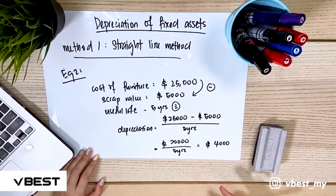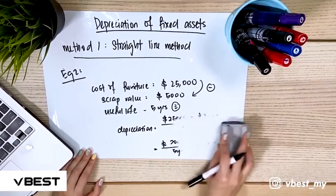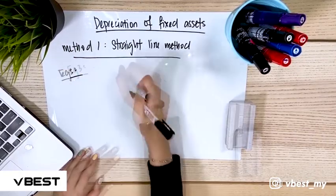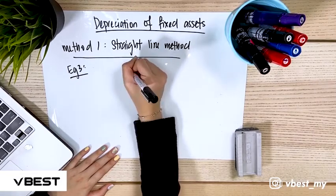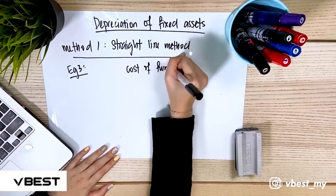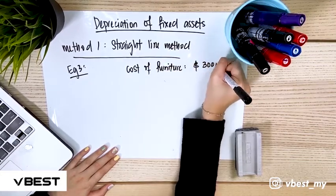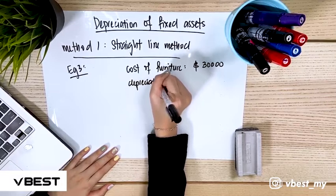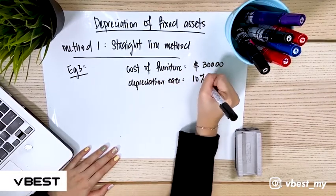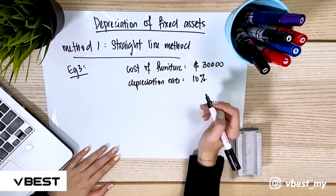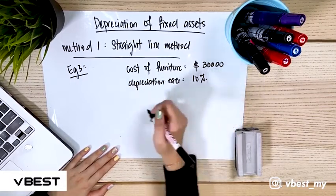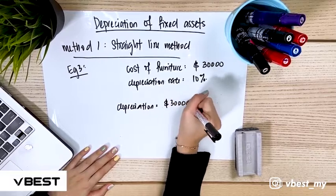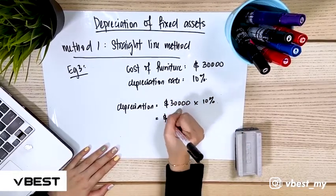That completes the first method. Now we move to the second formula with example three. The cost of furniture is 30,000 and the business has provided a depreciation rate of 10 percent. Using formula two, we multiply 30,000 by 10 percent, which gives a depreciation amount of 3,000.